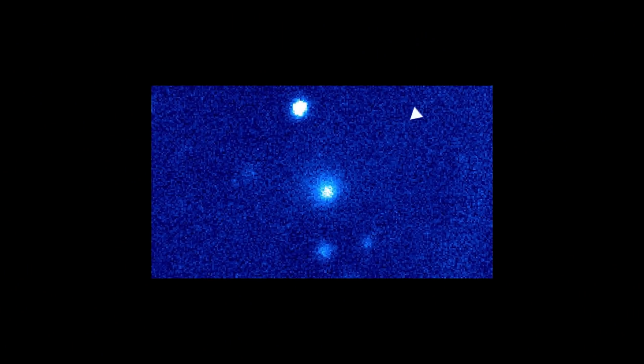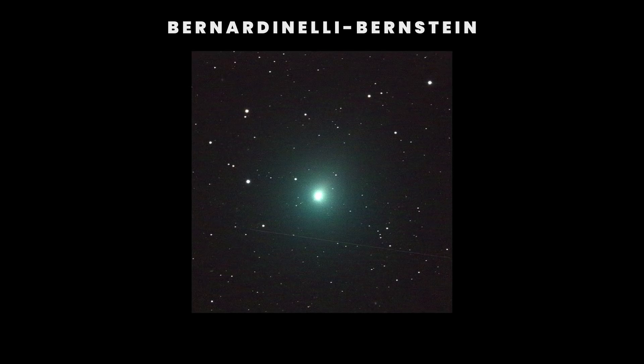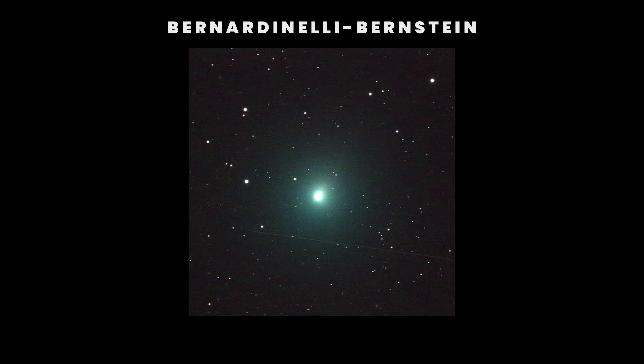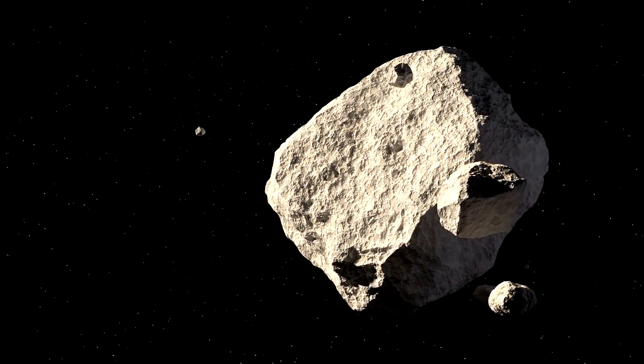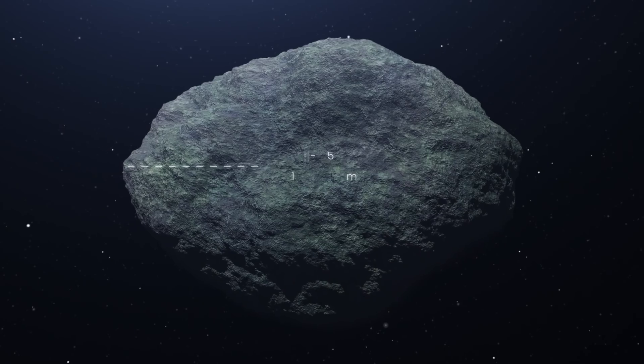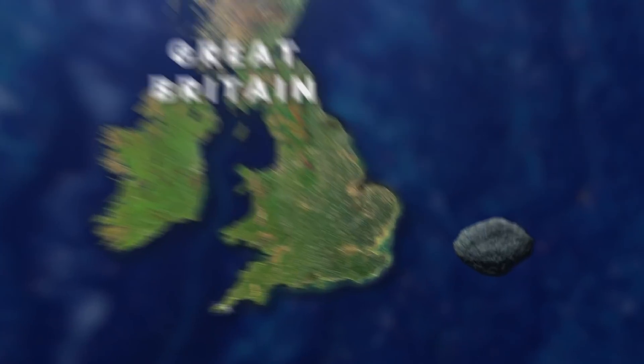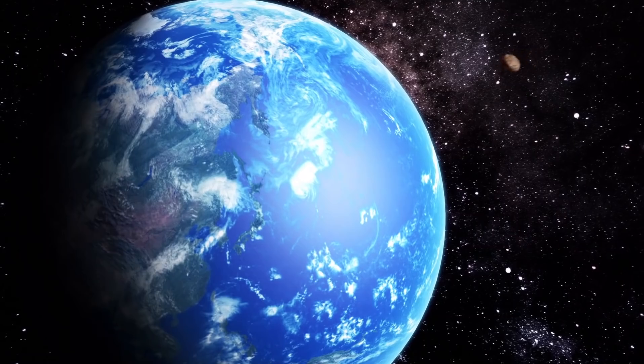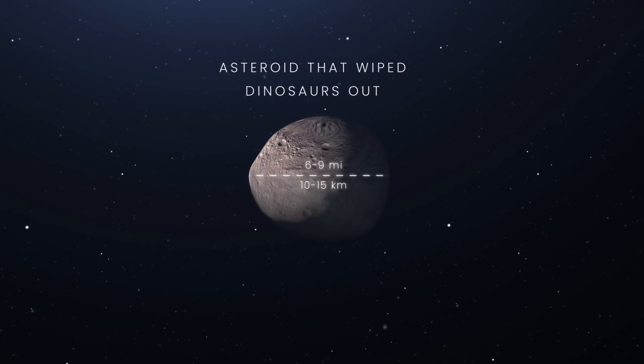It was dubbed C2014-UN271, also known as Bernardinelli-Bernstein, after its discoverers. Given the amount of sunlight it reflects, astronomers speculate the object's diameter is somewhere between 60 to 125 miles. That's an insanely big number. To compare, an asteroid that wiped dinosaurs out of existence is thought to have been just around 6 to 9 miles wide.